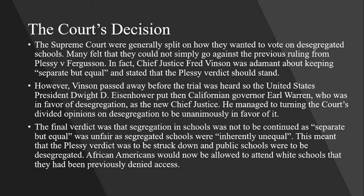The final verdict was that segregation in schools was not to be continued, as separate but equal was unfair, and segregated schools were inherently unequal. This meant that the Plessy verdict was to be struck down and public schools were to be desegregated. African Americans would now be allowed to attend white schools that they had been previously denied access to. With the new Chief Justice, he agreed with Brown that separate but equal was not equal — in fact, he stated it was inherently unequal because of the fact that they were separated. After the ruling, it was immediately ordered that every school was to be desegregated.